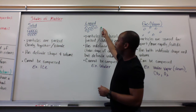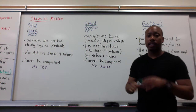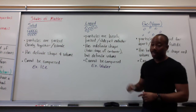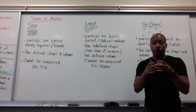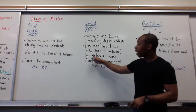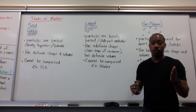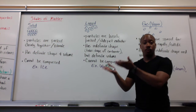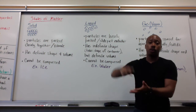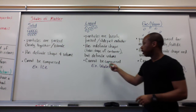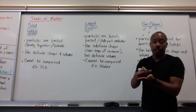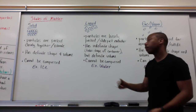Liquid is our second state of matter. The particles in a liquid are loosely packed and they slide past one another — that's why water flows. A liquid has an indefinite shape, meaning it takes the shape of its container. However, it has a definite volume: if I have five liters of water and put it into any container, it will hold five liters. A liquid cannot be compressed. An example is water.